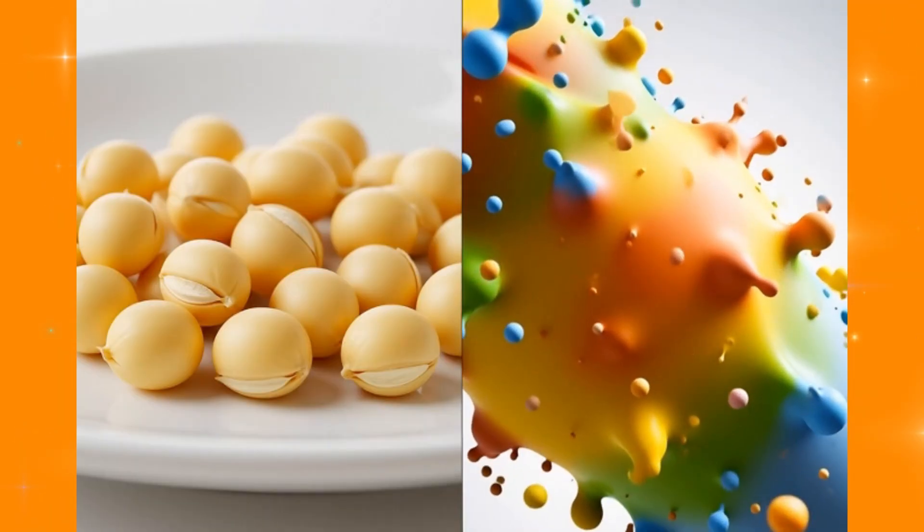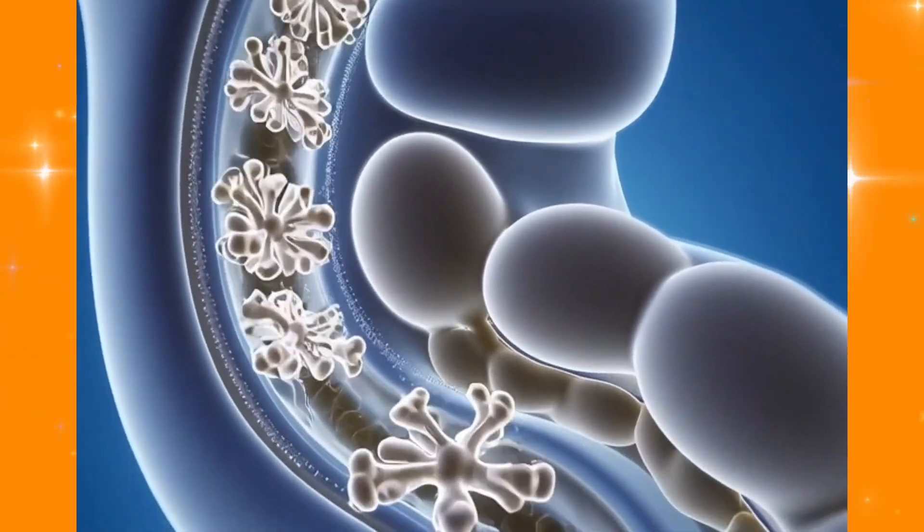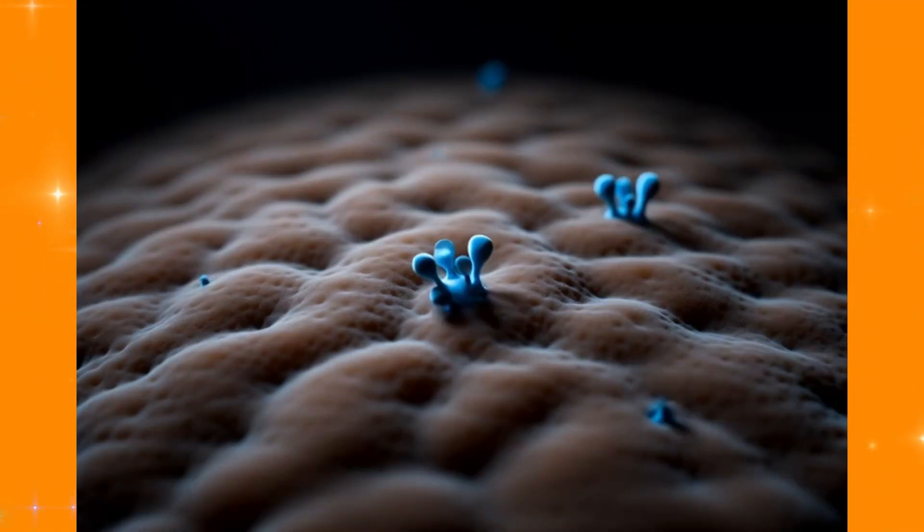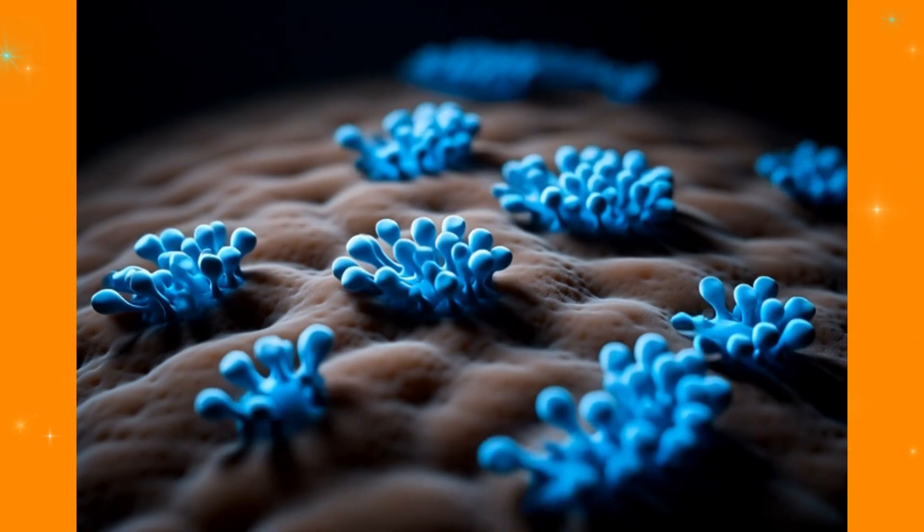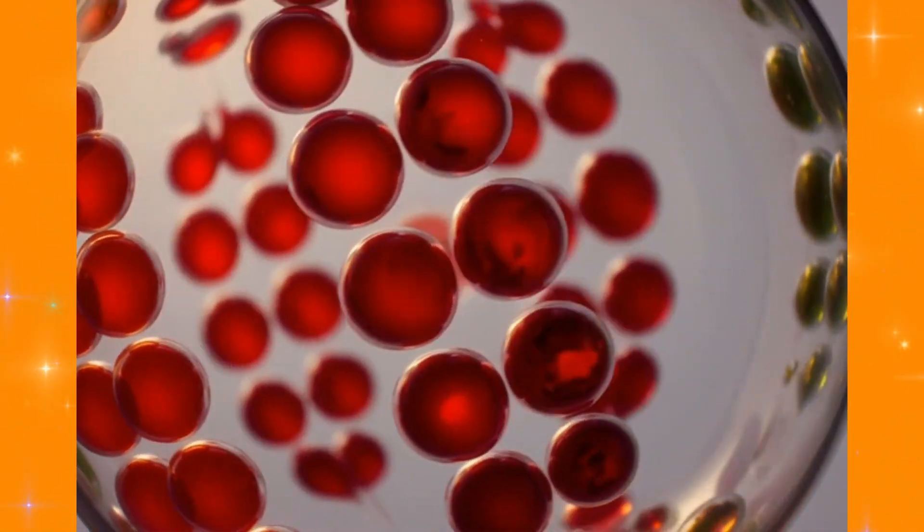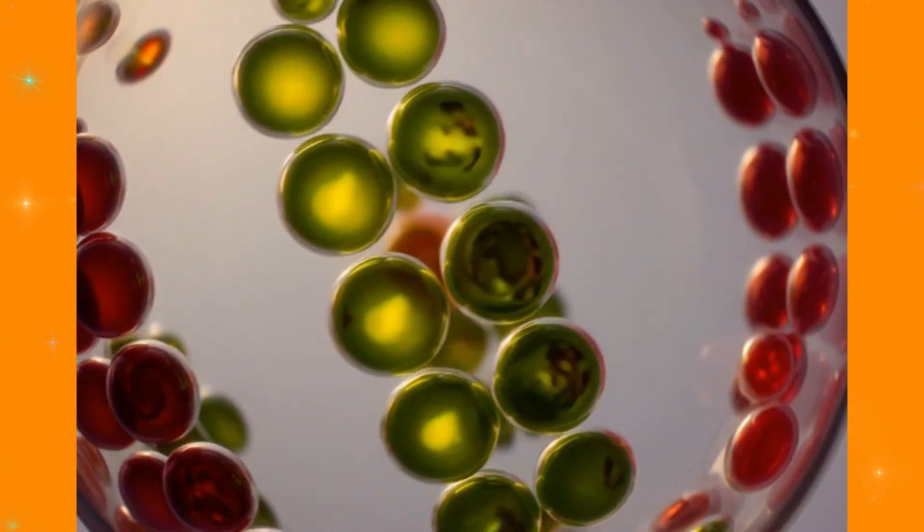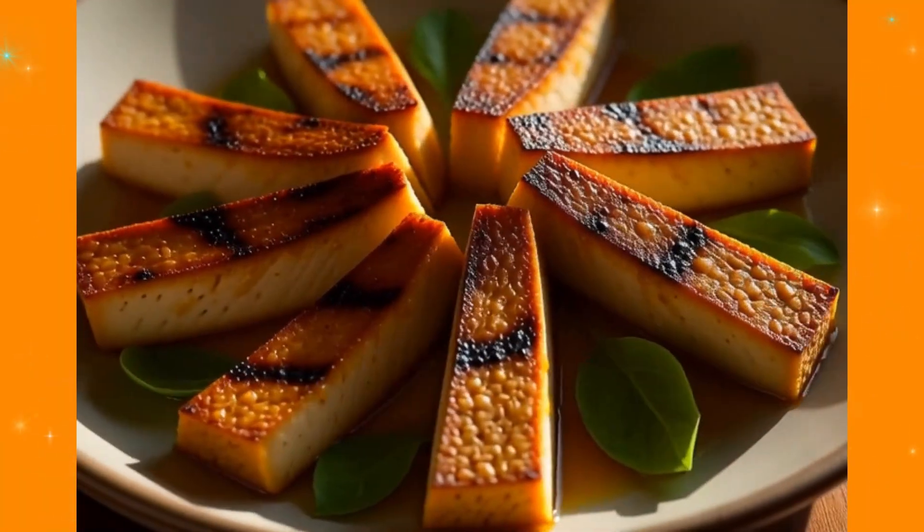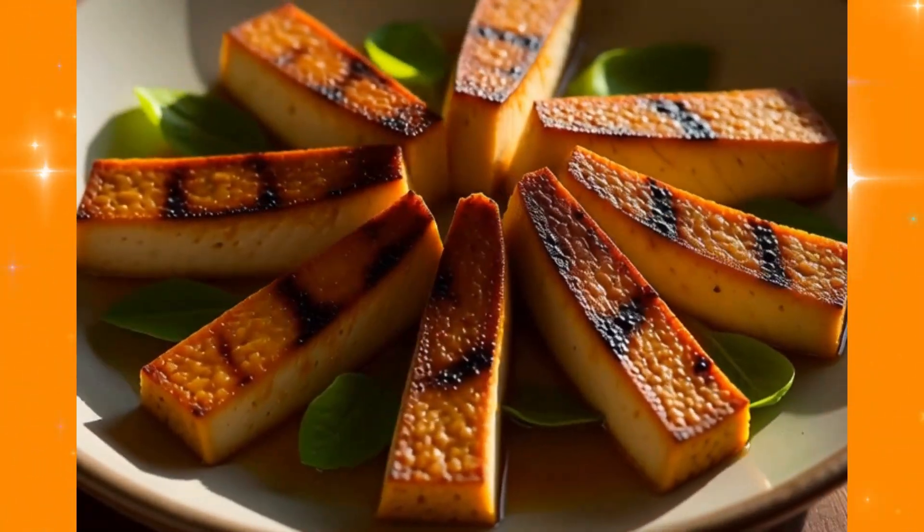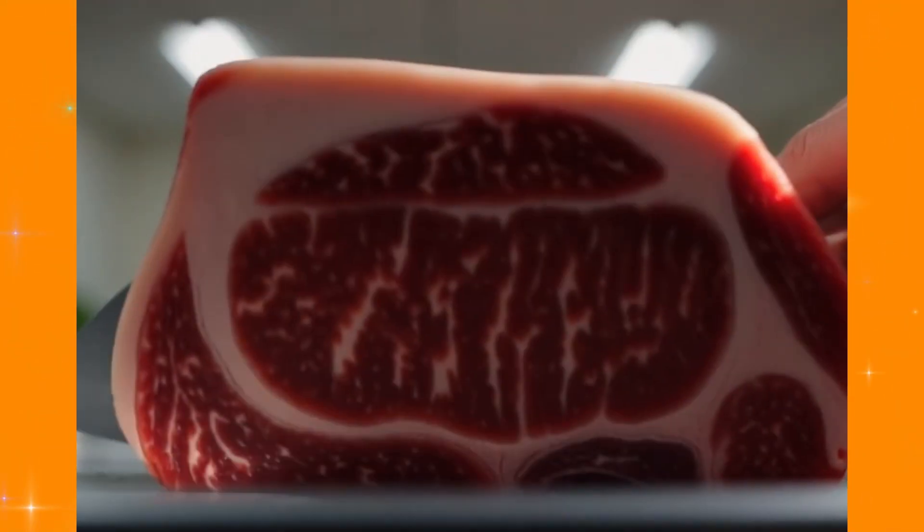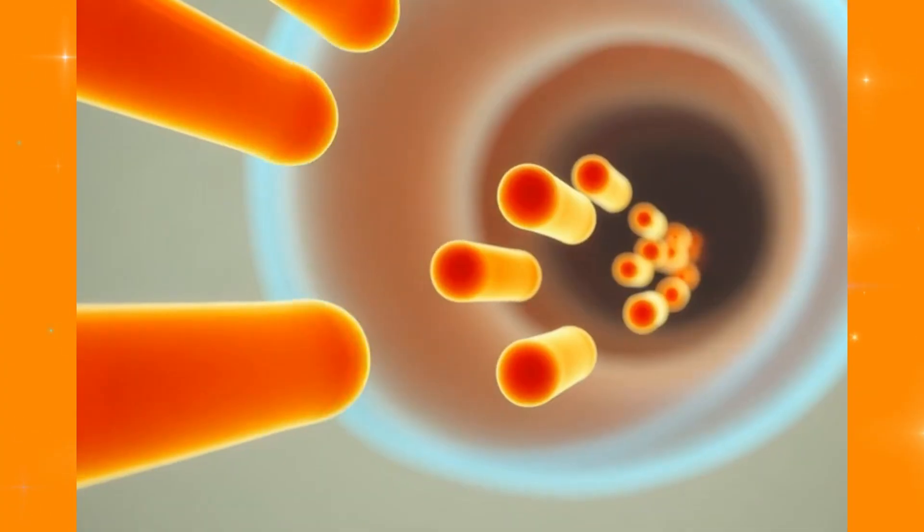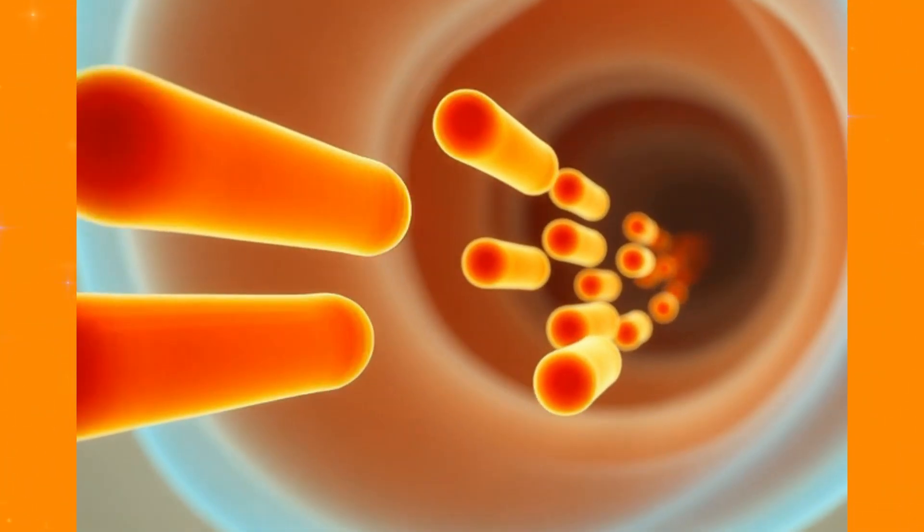Grass-fed beef provides more than just protein. It contains conjugated linoleic acid or CLA, which reduces gut inflammation and supports a healthy gut barrier. The zinc in beef is particularly important because zinc deficiency is linked to increased intestinal permeability. Just four ounces provides your daily zinc requirement plus 30 grams of highly bioavailable protein. The key is choosing grass-fed because the fatty acid profile is dramatically better for reducing inflammation compared to grain-fed beef.